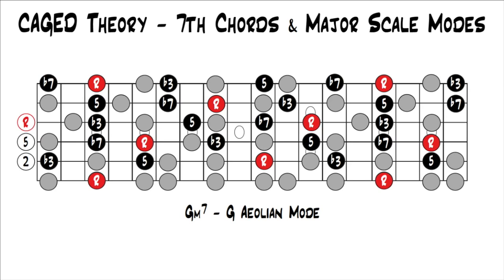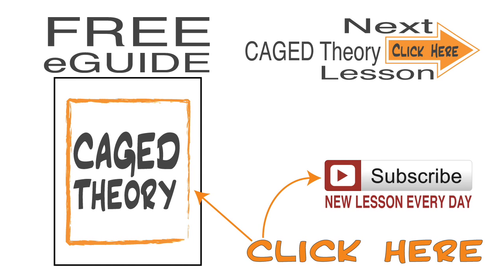Just like we did with the triads — where the triads fit within each of the modes — now we can do the same thing with the seventh chords. It changes a little bit since you have two different types of major chords. If you already know your modes, you might already know all this, but I wanted to make it really clear how you can use your seventh chords with the major scale modes using the cage system, so they're easier to visualize up and down the fretboard. Go ahead and move on to the next lesson where I'll show you how to use cage arpeggios combined with scales for soloing. Be sure to download the e-guide, subscribe — we have at least one new lesson every day.